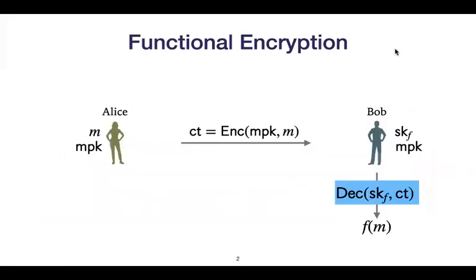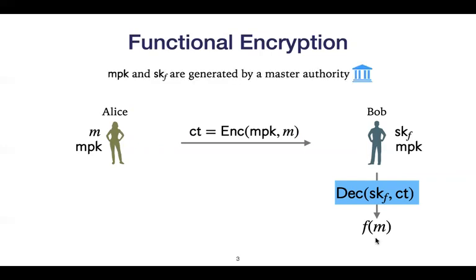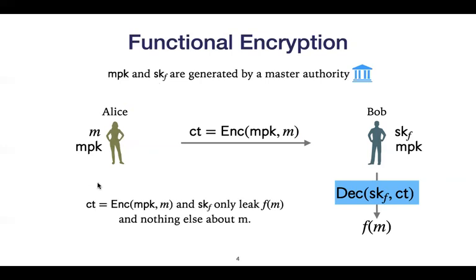I will briefly recall the setting of functional encryption. Here we have two parties, Alice and Bob. Alice has a master public key and some message, so she encrypts the message under the master public key. Bob, being in possession of the encryption key associated to some function f, can decrypt and will obtain the function of the message, and not the message itself. This master public key and the circuit key are generated by some master authority. In terms of security, we want that the encryption and the circuit key for the function f only leak f of m, and no other information about the message.